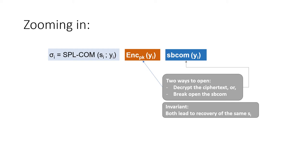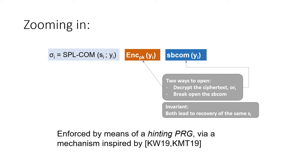Zooming in on why we build ciphertexts this way: we want to enforce an invariant that whether we decrypt using the orange box or the blue box, both lead to recovering the exact same seed. This is reminiscent of many templates to achieve CCA security, including the Naor-Yung template. However, here we enforce that both boxes lead to the same seed by relying on redundancy, specifically via a hinting PRG, using a mechanism inspired by the work of Coppoloy and Waters and Kitagawa et al.